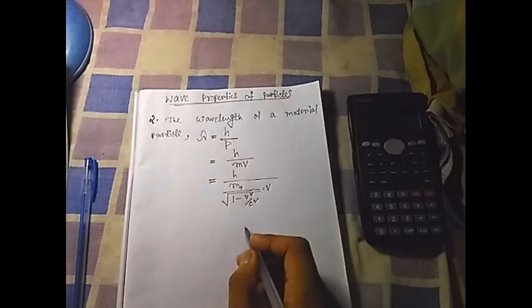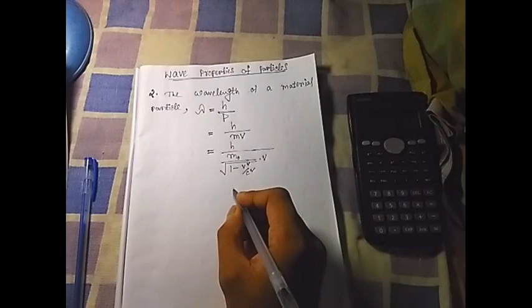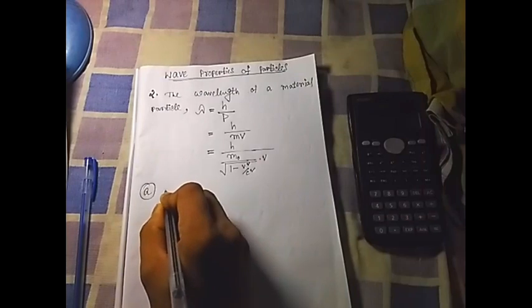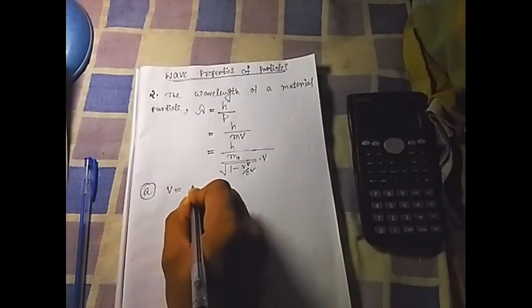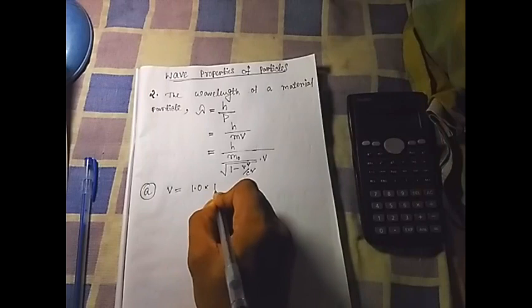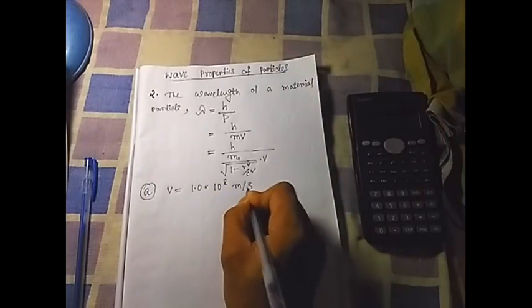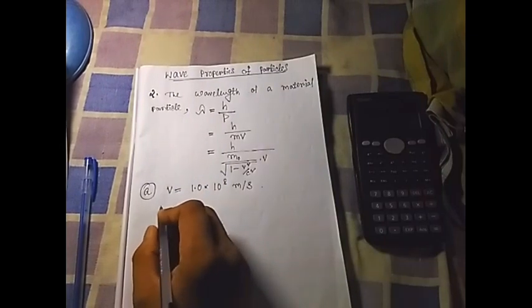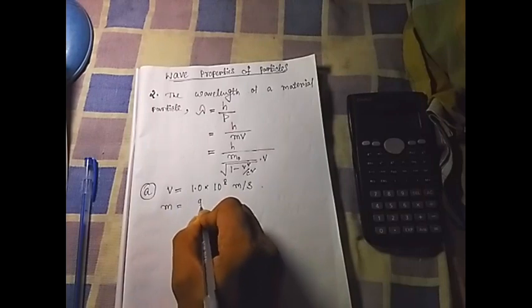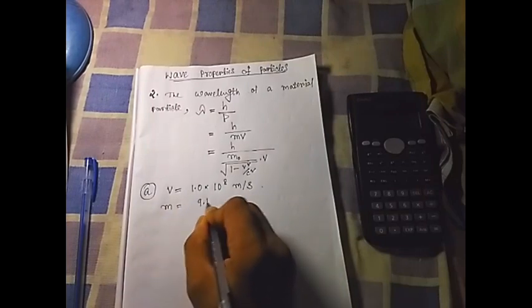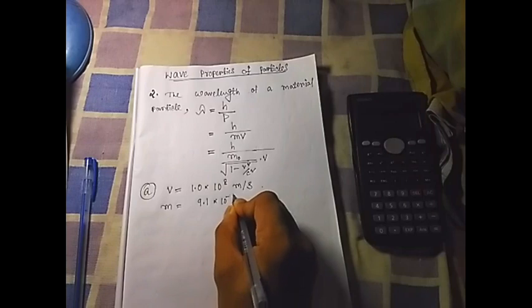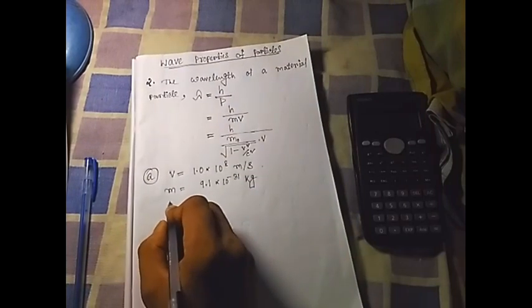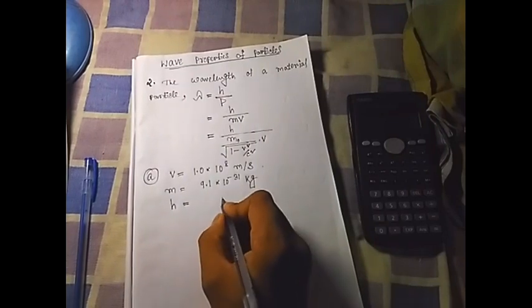Gamma is 1 over the square root of 1 minus V squared by C squared. If we put the given values for option A, the velocity is 1.0 times 10 to the power 8 meters per second, and the mass of an electron is 9.1 times 10 to the power minus 31 kilograms.